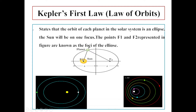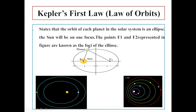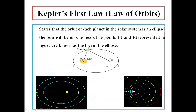So we have f1 and f2, and in one of them — for example, in f1 — you find the sun. The rotation of each planet is in elliptical form. We have different planets: the first, the second, the third, like the Earth. The rotation of these planets around the star, the sun, is in elliptical form. The law of orbits states that the orbit of each planet in the solar system is elliptical — not circular — for all planets of the solar system.